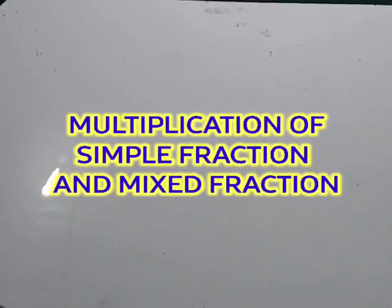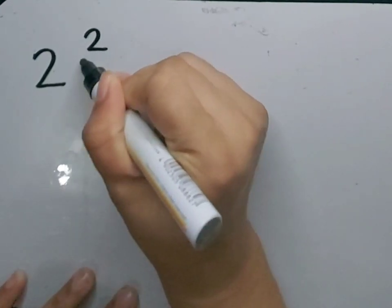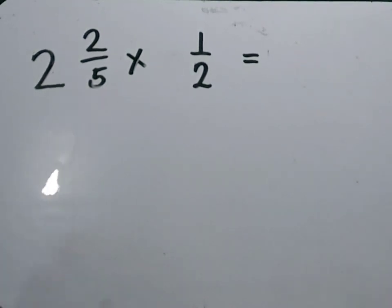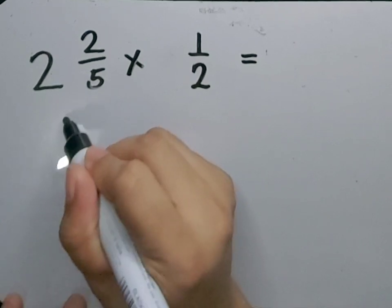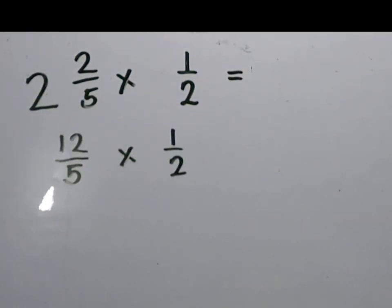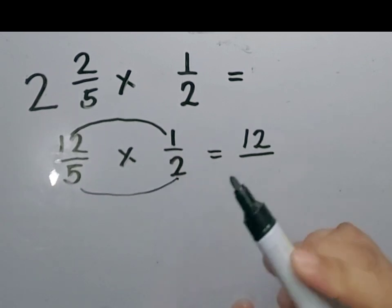Now that we know how to change mixed fractions to improper fractions, let's now go on to multiplying simple fractions and mixed fractions. Let's have the example 2 and 2 over 5 times 1 half. The first step is to change the mixed fraction to improper fraction. 5 times 2 is equal to 10, plus 2 is equal to 12. So we have 12 over 5 times 1 half. The next step is to multiply the numerator by the numerator and the denominator by the denominator. 12 times 1 is equal to 12. 5 times 2 is equal to 10.